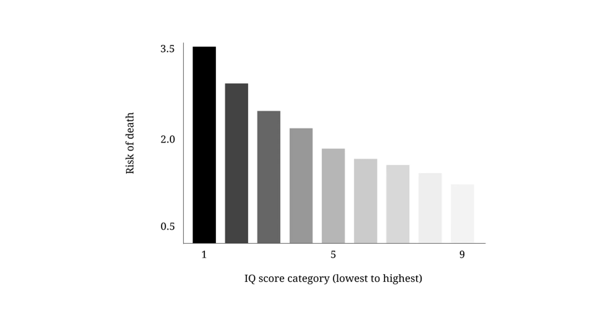Here is the risk of death in your IQ score category. So this is the highest IQ people. These are the lowest IQ people. Lower IQ people have a higher risk of death. And I think that's just tied with your ability to think and make better decisions overall.